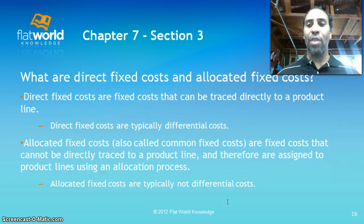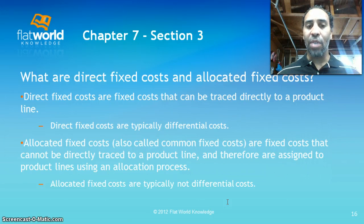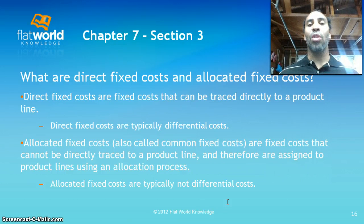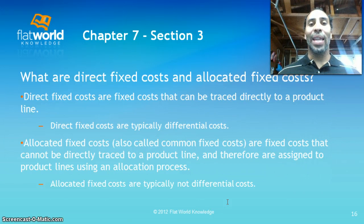Direct fixed costs can be traced directly to a product line and are typically differential costs — if the product or product line goes, so does that cost. Allocated fixed costs, also called common fixed costs, cannot be directly traced to a product line and are assigned using an allocation process. So if $90,000 is allocated to charcoal and you disband the charcoal product, that $90,000 gets split between the remaining product lines. Allocated fixed costs are typically not differential costs — they remain, and that is the key point to remember.